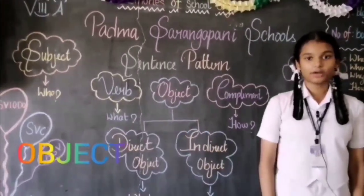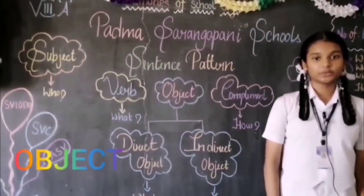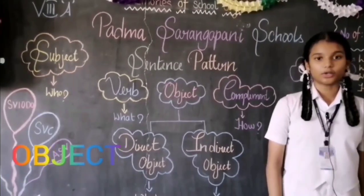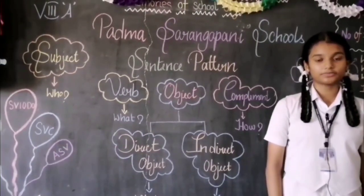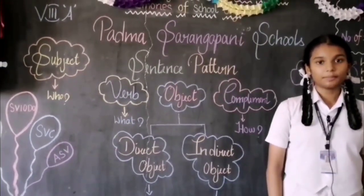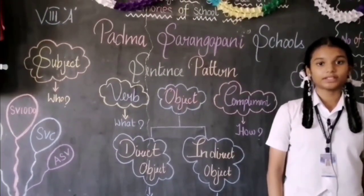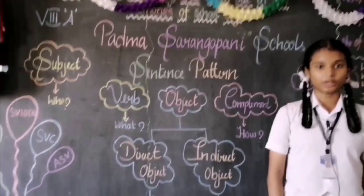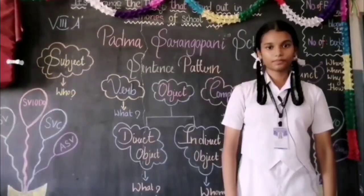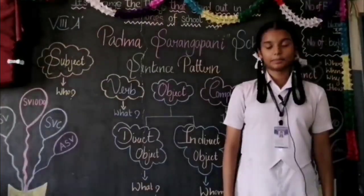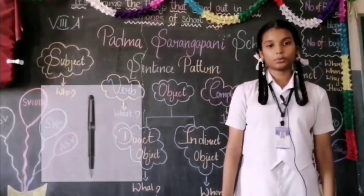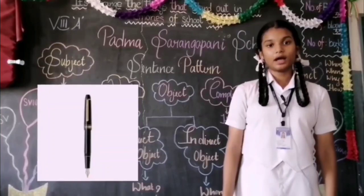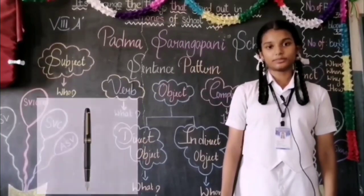Object: to get the object, ask the question WHAT for a thing and WHOM for a person — using nouns or pronouns. Example: he bought a pen. He bought what? A pen. A pen is an object.